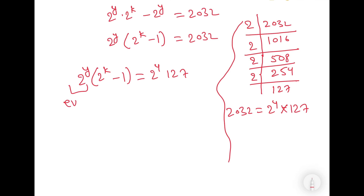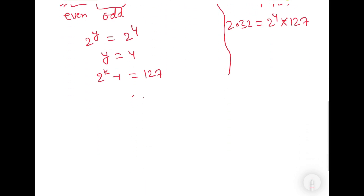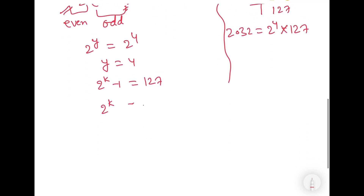On the right side, 2 to the power 4 is an even number and 127 is an odd number. Since 2 to the power of any number is always even, and subtracting 1 from an even number gives an odd number, we compare: even with even and odd with odd. So 2 to the power y equals 2 to the power 4, giving y equals 4. And 2 to the power k minus 1 equals 127, so 2 to the power k equals 128, which is 2 to the power 7, giving k equals 7.